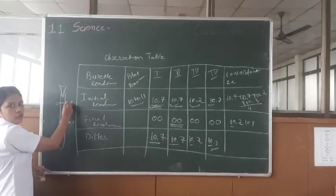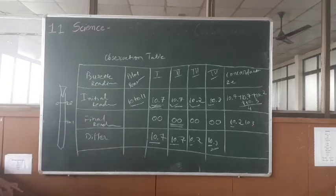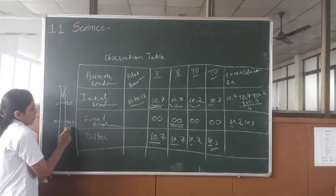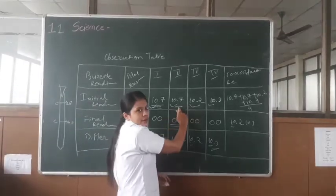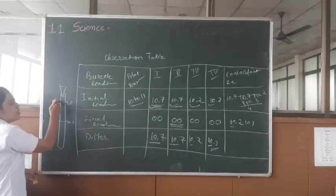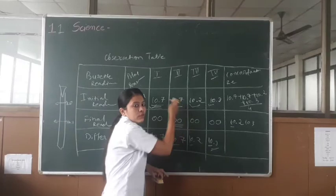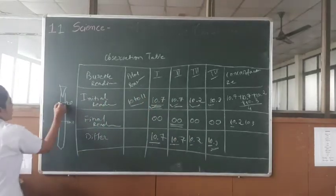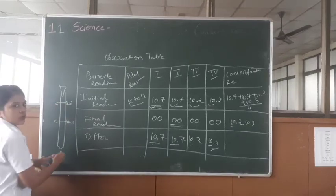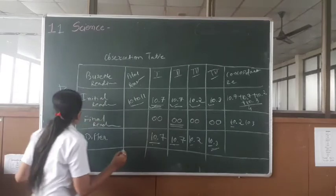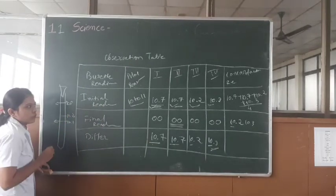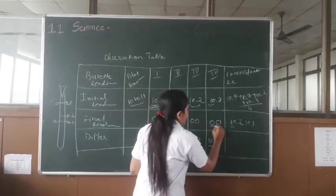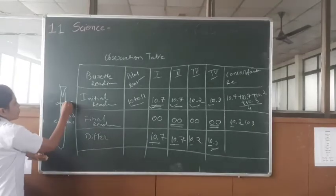Then for second reading, what will we do? Set 0. Then again we will titrate. After titration, we have 10.7. Our solution will be here for second reading. We now have second reading. But after second reading, again we will do set 0. That's why we write 0, 0. Then we will do the third reading. Our solution is here, we will do titration. After titration, we have 10.2. Third reading complete. After third reading, again what will we do? Set 0. That's why we write 0 again.